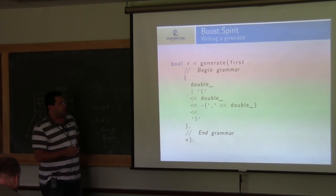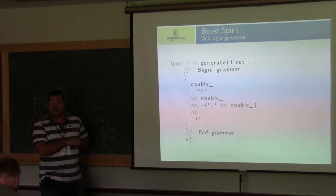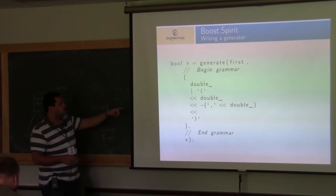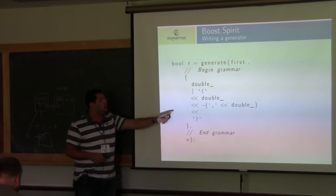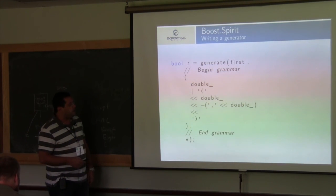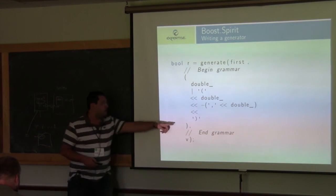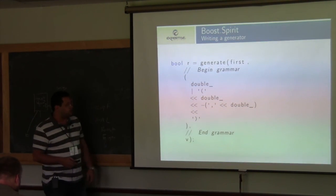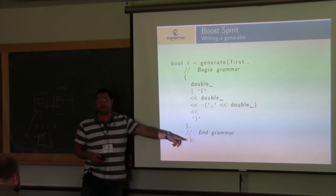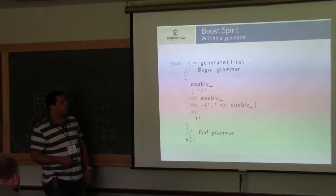For generation, you can see it is very similar to parsing. You say you have a double or — this is an alternative — you have a parenthesis followed by a double followed by optionally a comma followed by a double, and then a closing parenthesis. It uses the data in the Boost Fusion sequence to generate the actual text for that grammar.